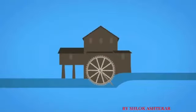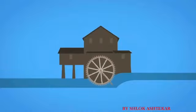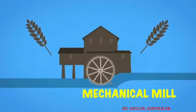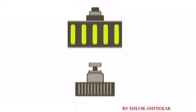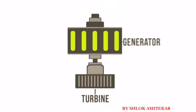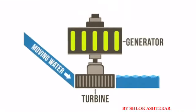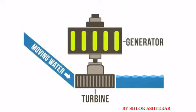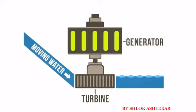One of the first uses of hydro-energy was for mechanical milling, such as grinding grains. But today, modern hydro plants produce electricity using turbines and generators. The mechanical energy created by moving water spins rotors on a turbine, which is connected to an electromagnetic generator that produces electricity when the turbine spins.